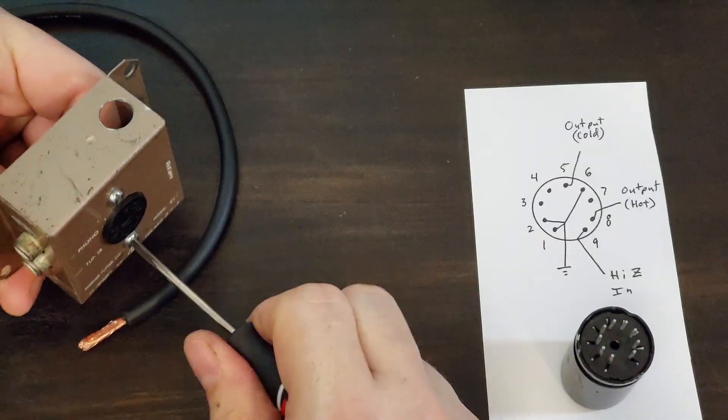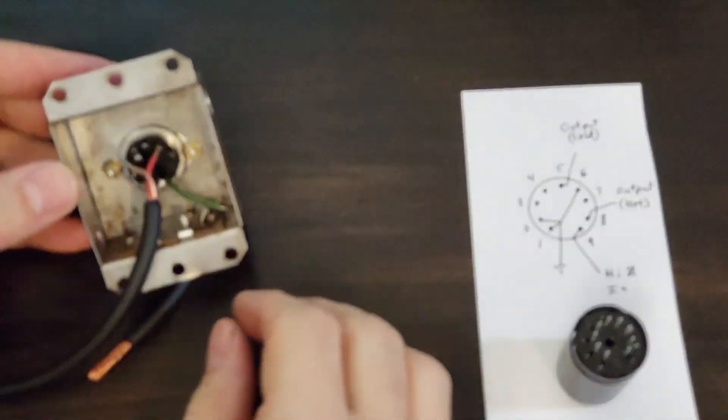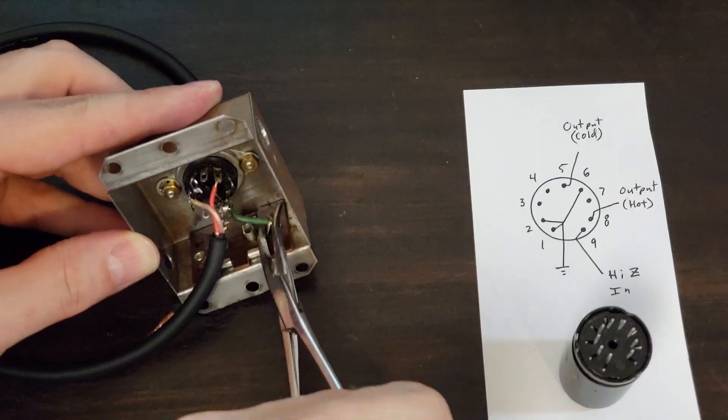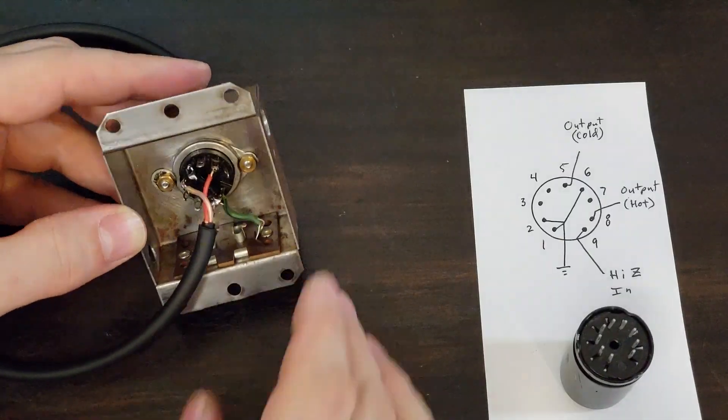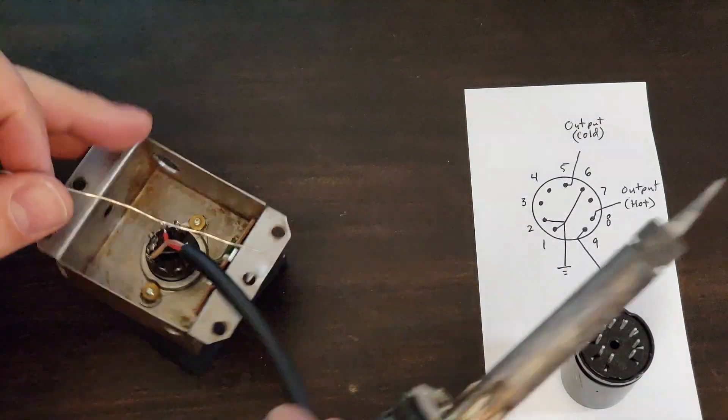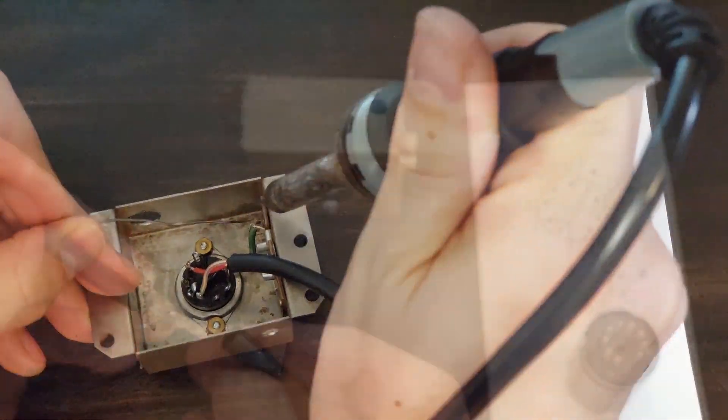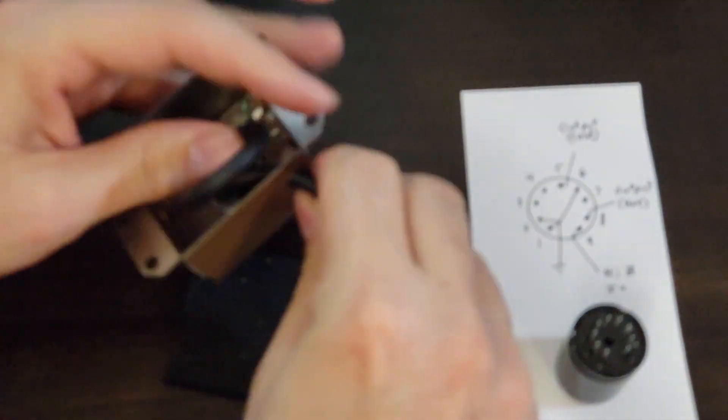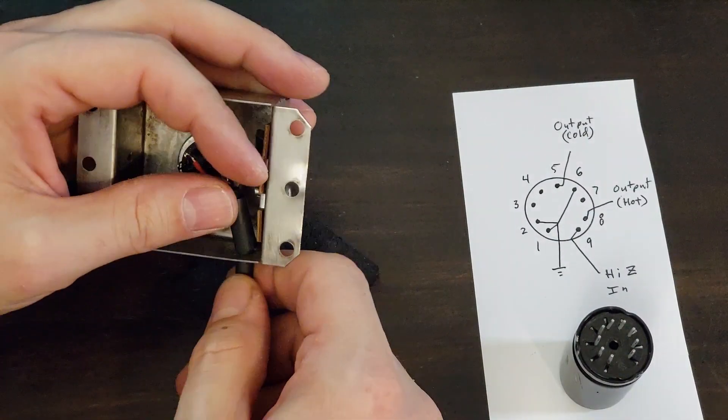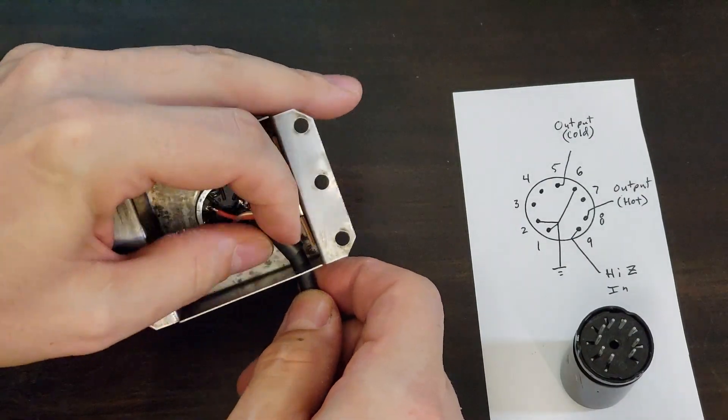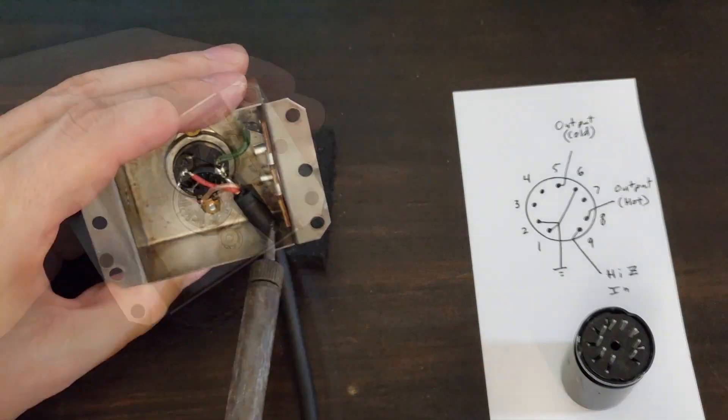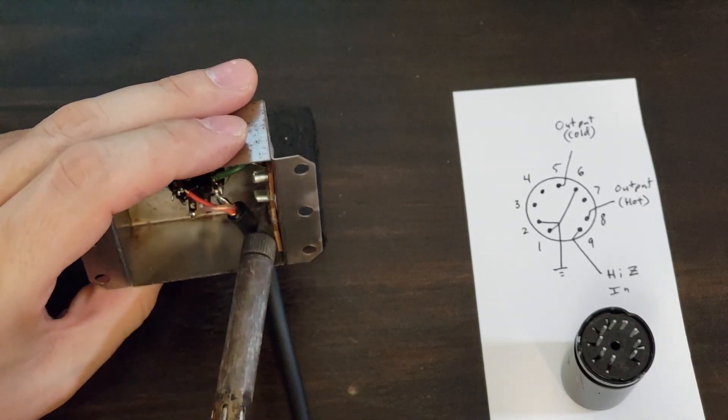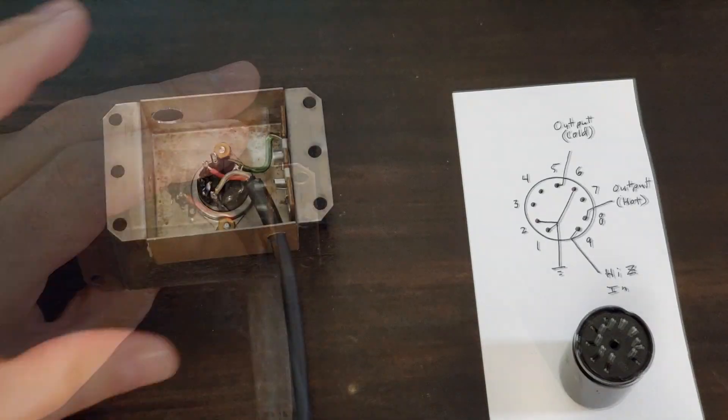Now I'll solder in that ground wire to the existing RCA connector. Since I don't have any strain relief on this cable, I'm going to make a strain relief out of some heat shrink tubing, which I put on before I inserted the cable through the box. Now I'll heat that and this will ensure the cable won't pull out over repeated uses. My joints are nice and tight.